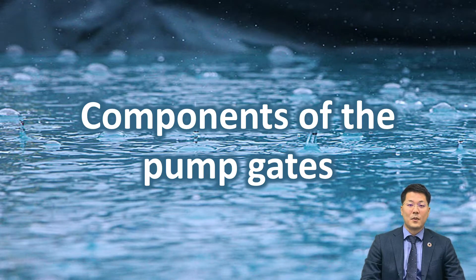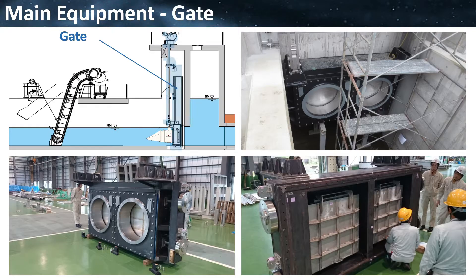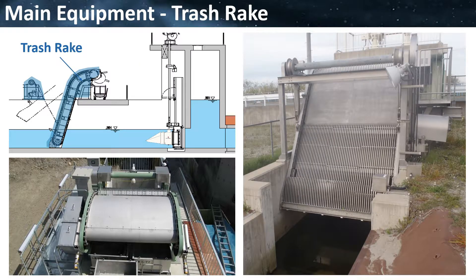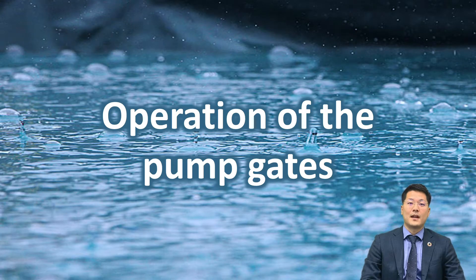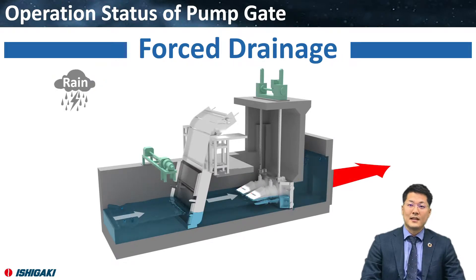Now let's see the components of pump gates. There are pumps, a gate, and a trash rake. Let me explain how to use the pump gate. When not using the pump, raise both the pump gate and the trash rake. When it rains and you need to drain water, lower them and start the pump to discharge water.